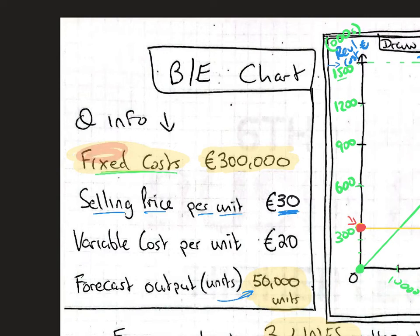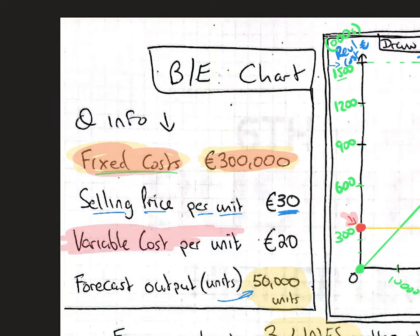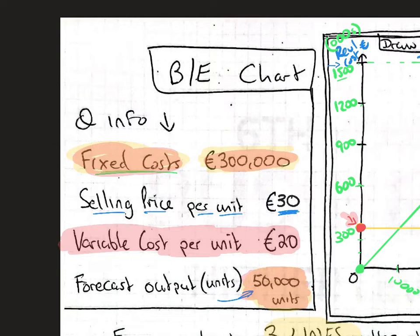Our total costs are made up of fixed costs — €300,000 regardless — plus variable costs. Variable cost per unit is the cost of things like raw materials and wages that we spend every time we make a unit. In this example, it costs €20 every time we make a unit. At zero units we spend zero on variable costs, and at 50,000 units we multiply €20 by 50,000 and add the fixed cost.